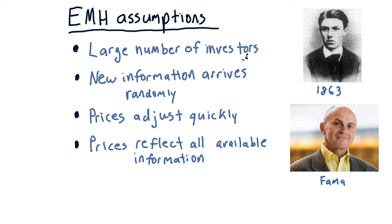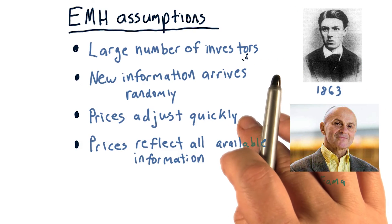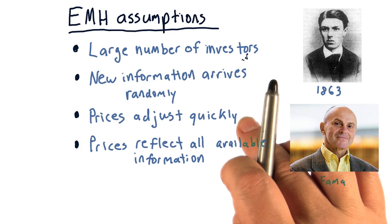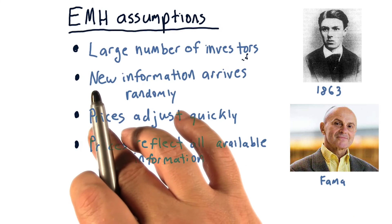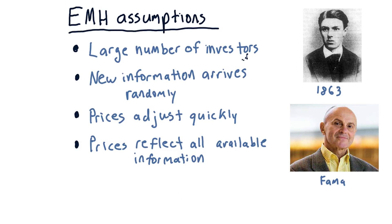The next assumption is that new information arrives randomly. So it arrives at random times, it arrives at random rates for different stocks. But it's constantly arriving and investors are paying attention to that information. And therefore, the prices are adjusting quickly.